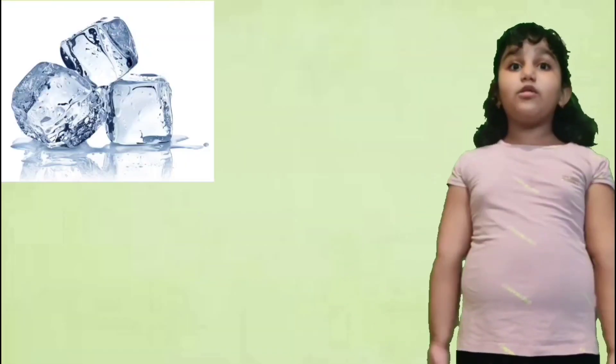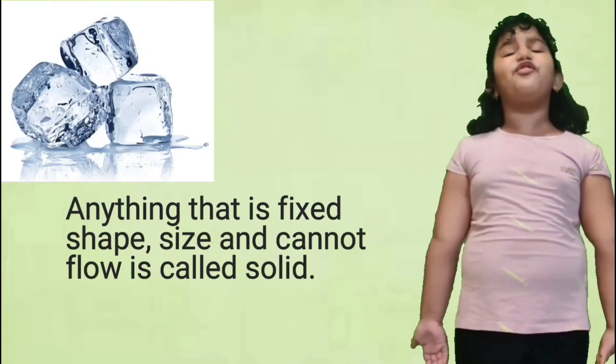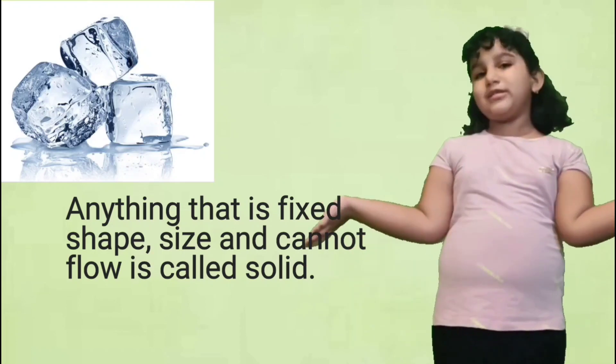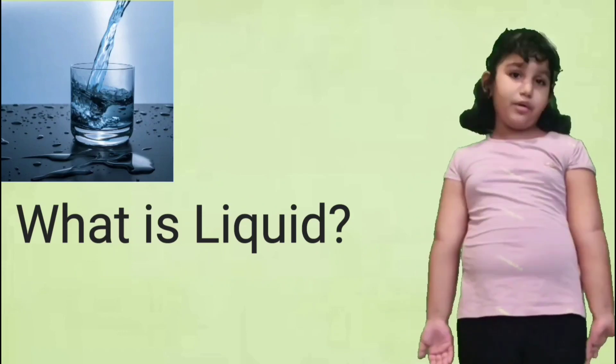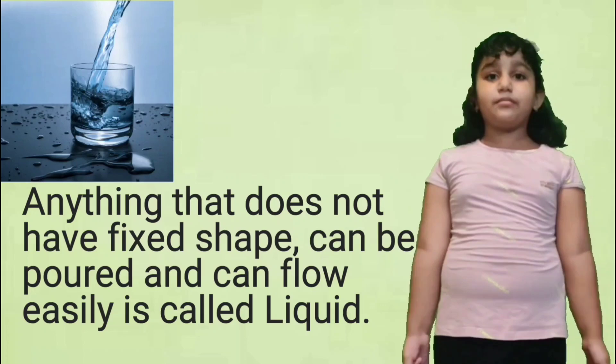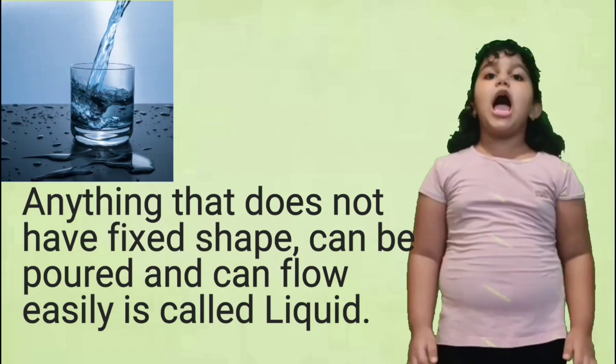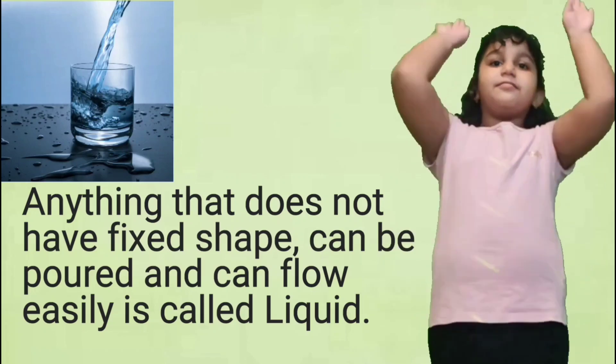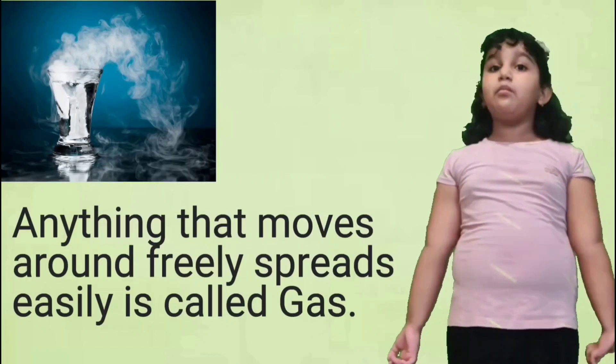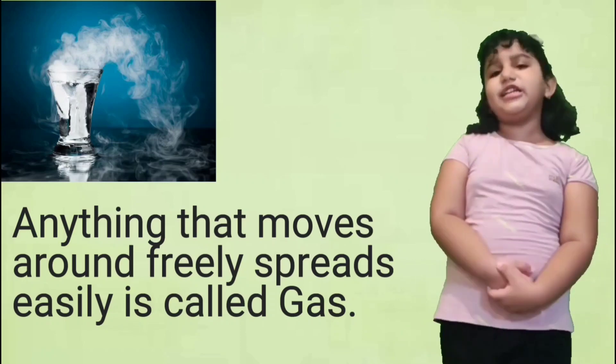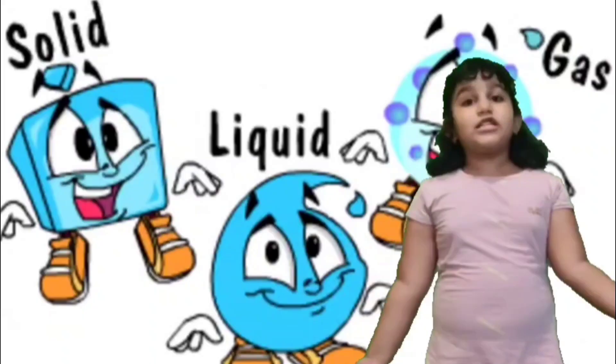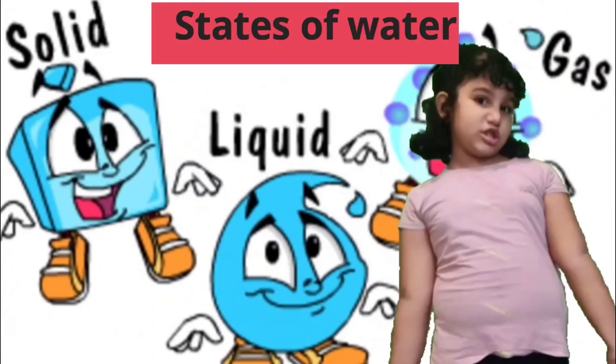Let me tell you what is solid. Anything that is fixed shape, size and cannot flow is called solid. Liquid: anything that does not have fixed shape and can be poured and flow easily is called liquid. Gas: anything that moves around freely, spreads easily is called gas. So let me tell you states of water.